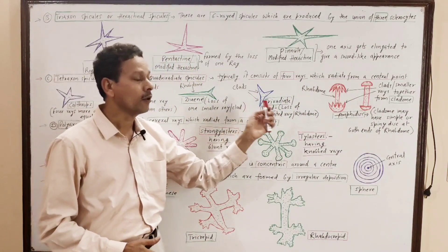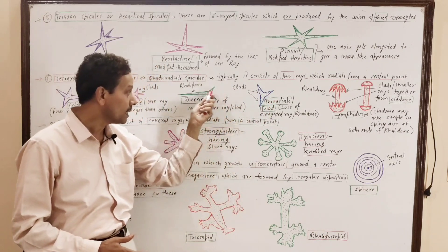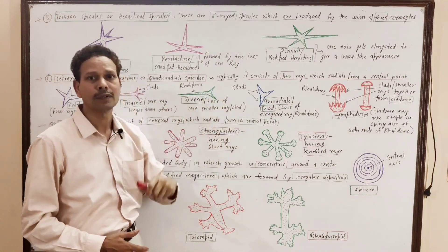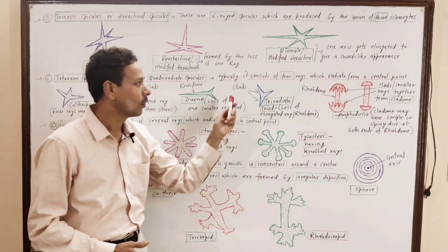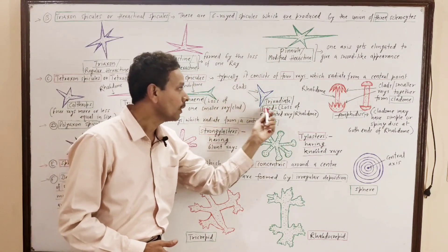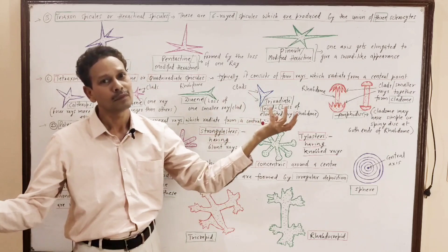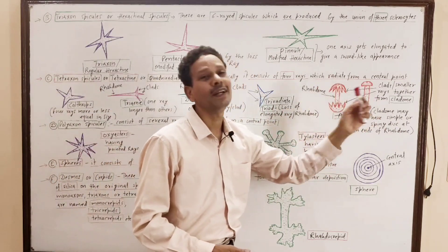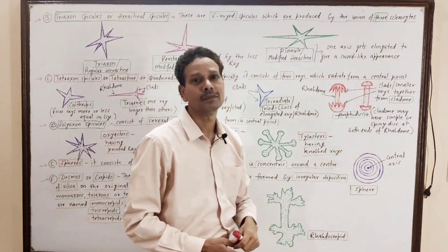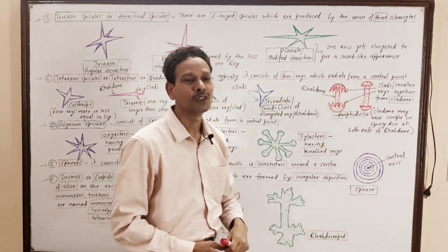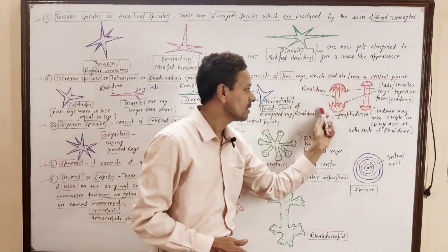In the triradiate or triod form, all three smaller rays are present. As in the diaxon form one smaller ray gets lost, here in the triradiate, the longer ray gets lost — only three clads remain which collectively constitute a cladome. Amphidisc has a central elongated rhabdom, and both ends of this rhabdom may consist of a simple disc or a spiny disc on both ends. These are amphidiscs.